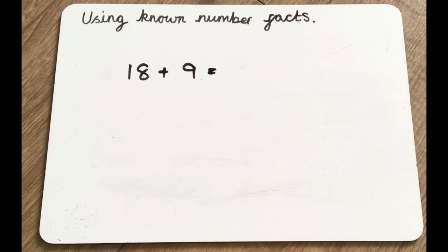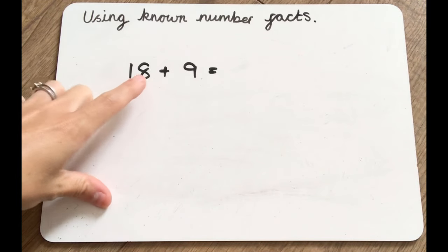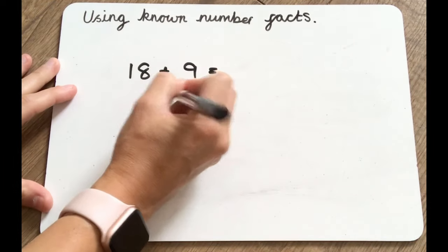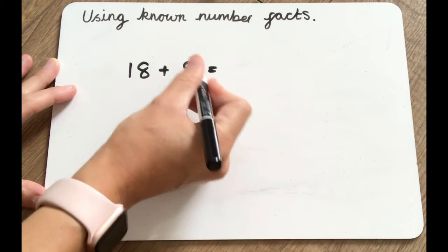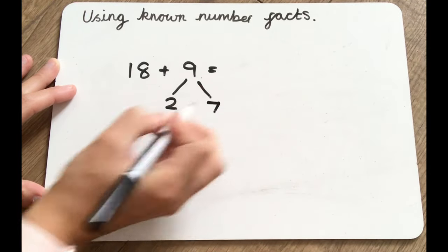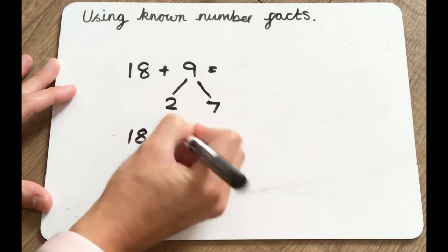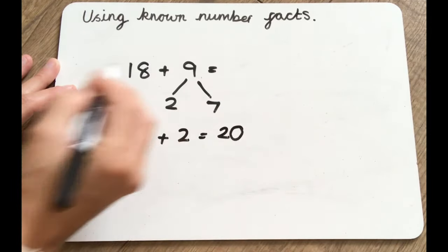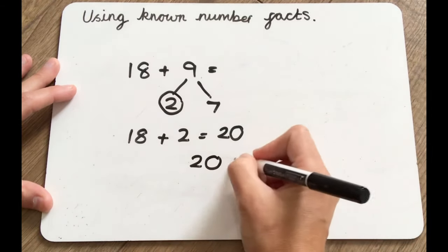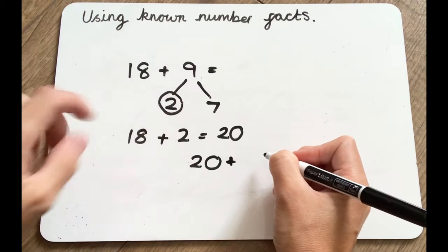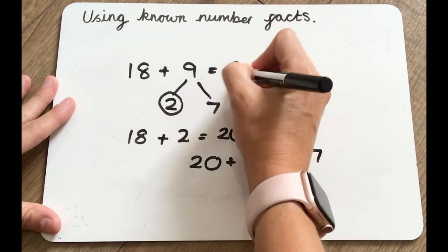Let's do one more together. So we've got 18 here. We're going to want to go to the next 10, which is 20. How many do we need to add to get to the next 10? 8 add 2. So I'm going to partition this number and use 2 to get to 20. Now how many more do I need to add to make 9 in total? I need 7 because 2 add 7 equals 9. So 18 add 2 equals 20, which is our next 10. Now we're going to do 20 add 7, because the total needed was 9, and 7 add 2 is 9. So 20 add 7 equals 27. Therefore 18 add 9 equals 27.